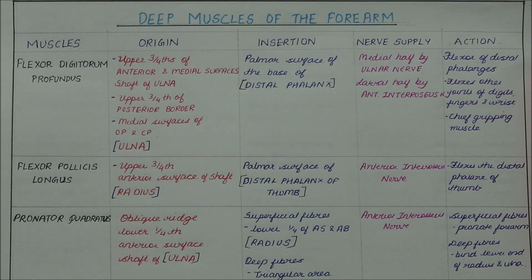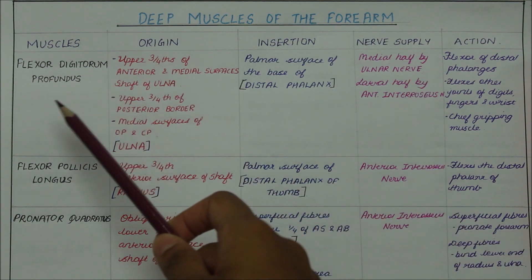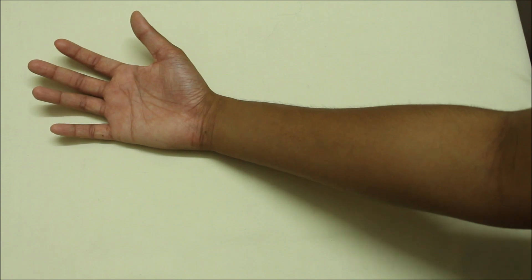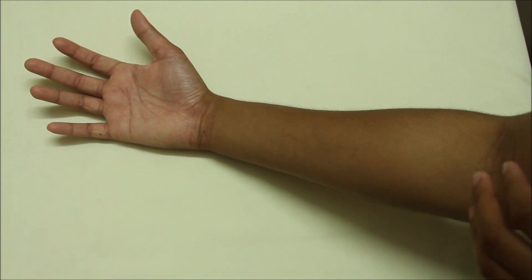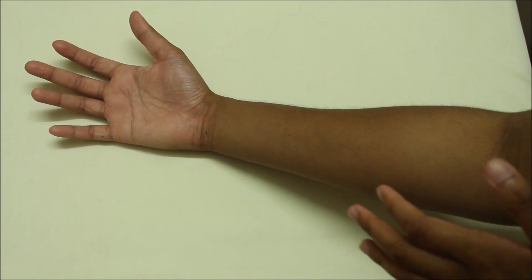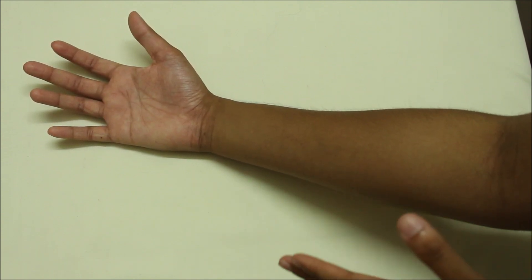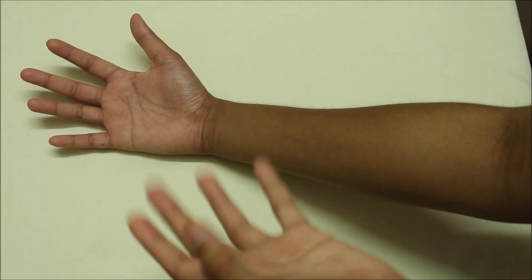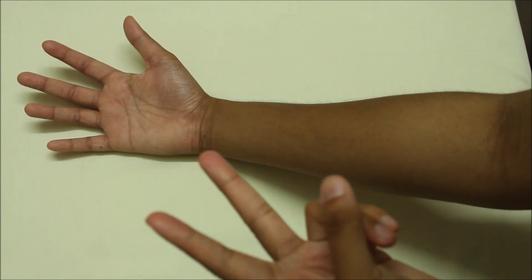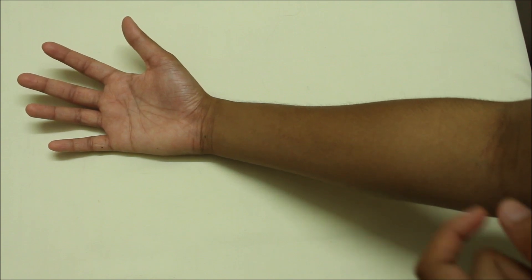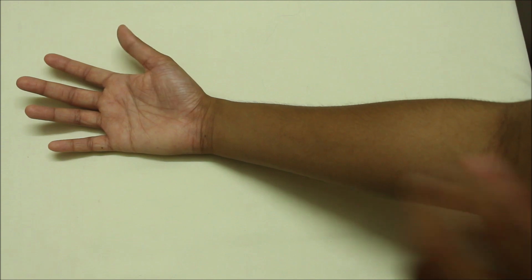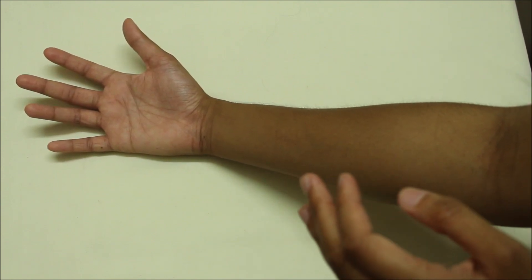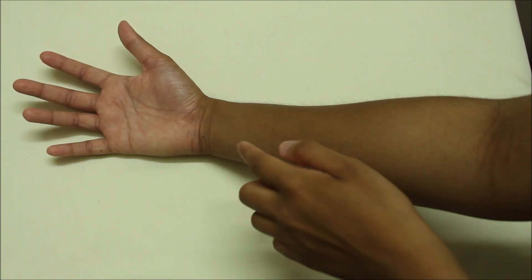Now let's move on to the deep muscles of the forearm. We have three muscles: the flexor digitorum profundus, the flexor pollicis longus, and the pronator quadratus. The flexor digitorum profundus is a deep muscle that supplies the digits, analogous to the superficial flexor digitorum superficialis. The word pollicis refers to the thumb, so the flexor pollicis longus flexes the thumb. And we have the pronator quadratus, analogous to the pronator teres seen in the superficial layer.